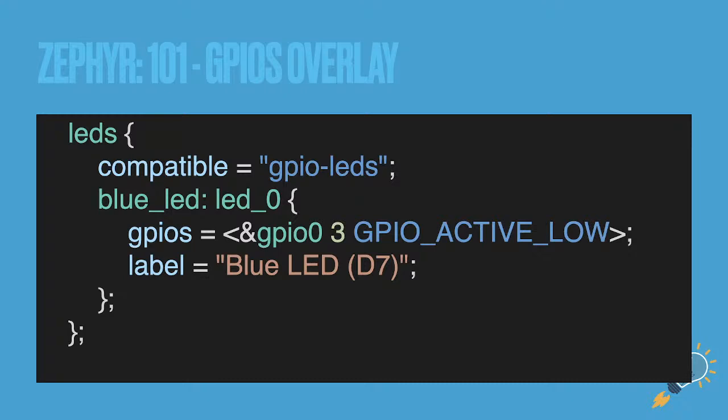In the GPIO entry, the first element is the port (GPIO 0). If you have a device with multiple ports it will be GPIO 0, 1, 2, 3 — on the nrf9160 there's only one port, but on the nRF52 there are two. The second entry is the pin number, and the third is flags. Flags set the default state of the pin — input, pull-up, pull-down — and you can change them at runtime too.